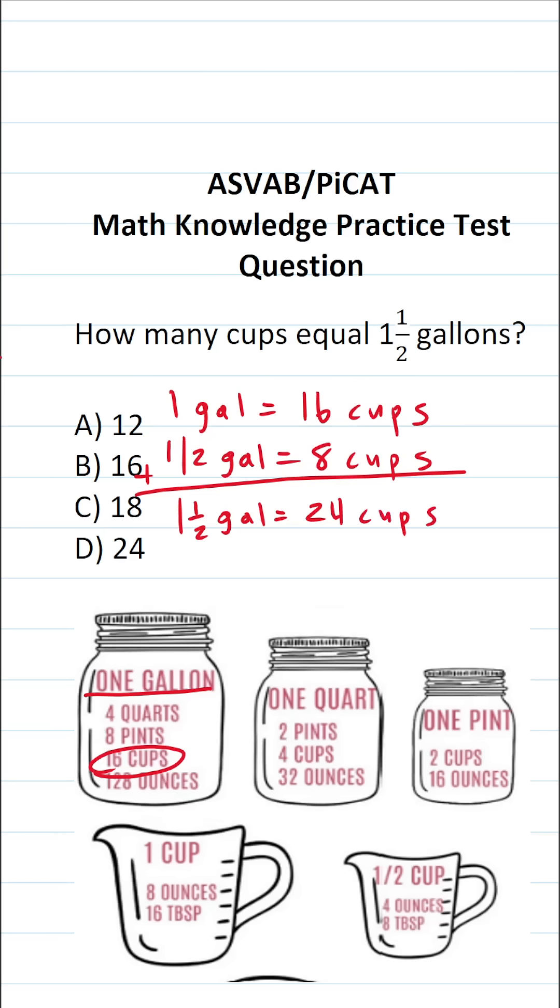So as you can see, there are 24 cups in one and one half gallons. So the correct answer to this one is D.